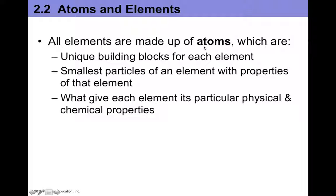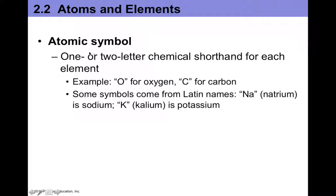All elements are made up of atoms and these atoms are the unique building blocks for each element. The smallest particles of an element that have properties of an element, that's what an atom is. They also give each element its particular physical and chemical properties. The atomic symbol is like a one or two letter chemical shorthand for each element. An example would be O for oxygen or C for carbon. Some symbols are derived from their Latin names. So for sodium that's actually Na from the Latin natrium. And for potassium we denote this as K which is the Latin kalium.